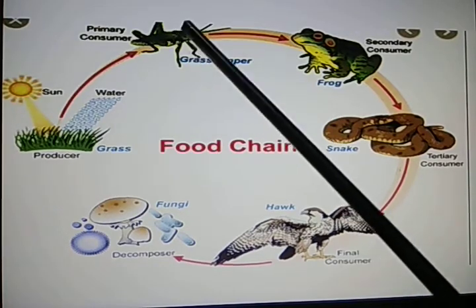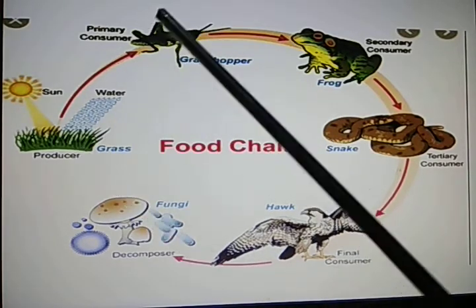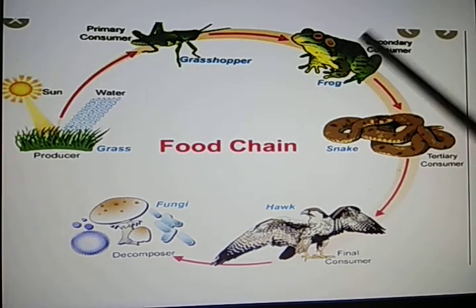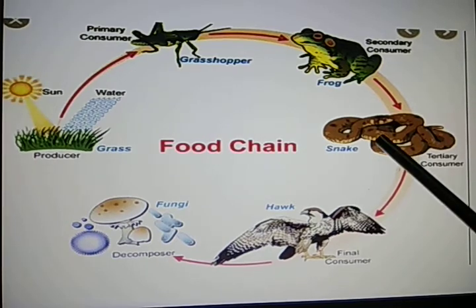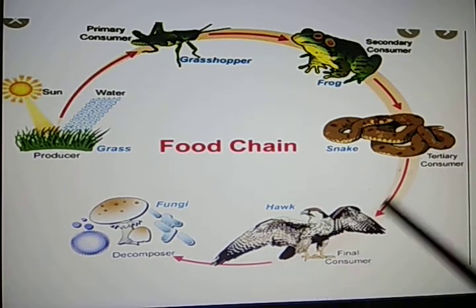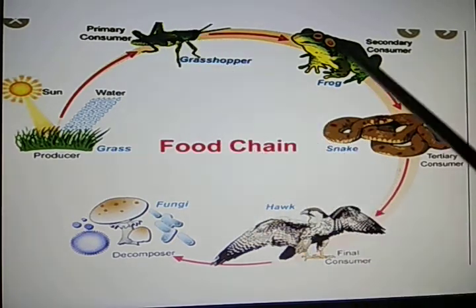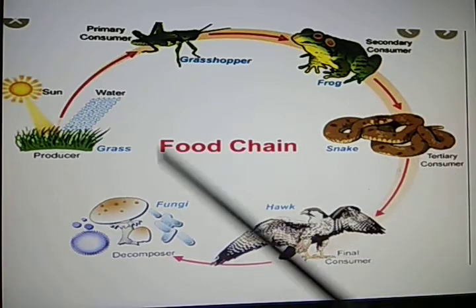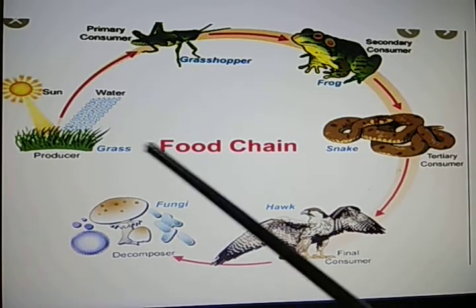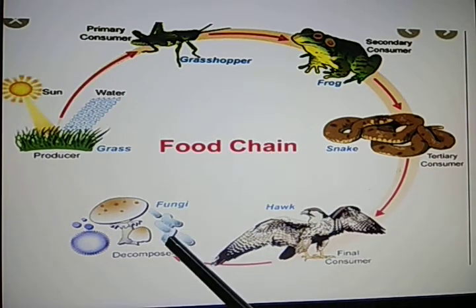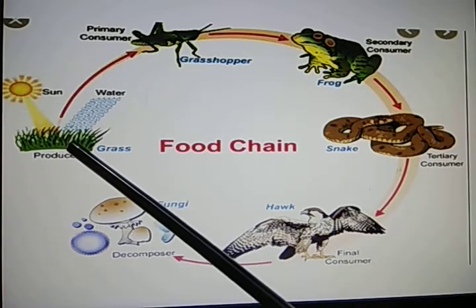For example: producers are eaten by a grasshopper as a primary consumer; the grasshopper is eaten by a frog as a secondary consumer; the frog is eaten by a snake as a tertiary consumer; and finally the snake is eaten by a hawk. All animals — grasshopper, frog, snake — when they die, they are decomposed by decomposers such as bacteria and fungi in the soil, and that is again utilized by the producers.